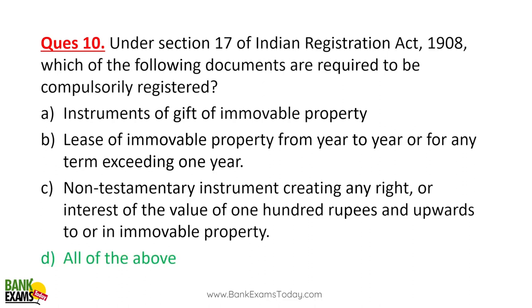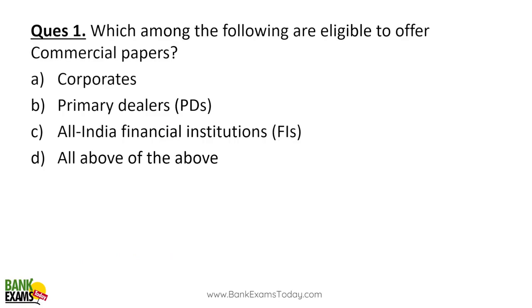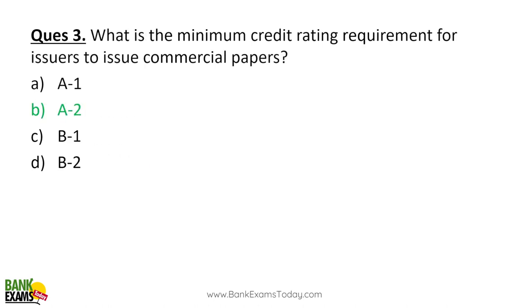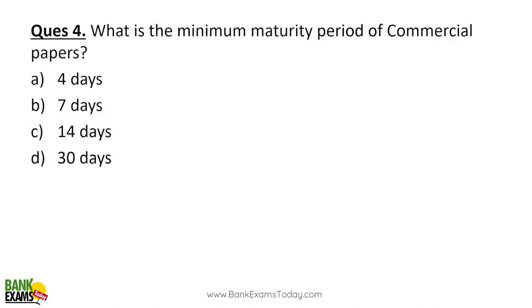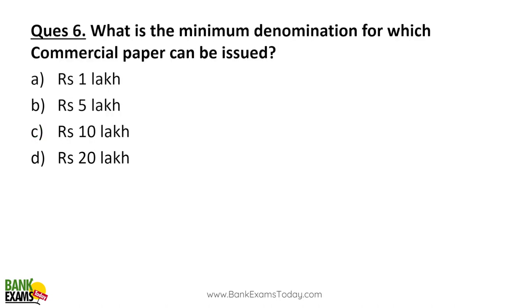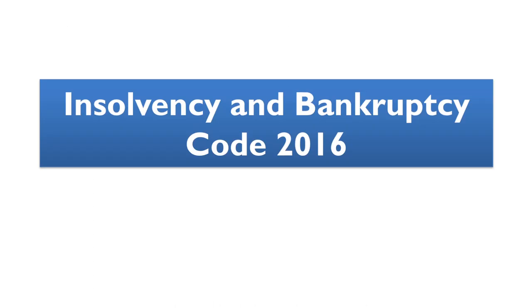The legal heirs of a deceased borrower are liable up to the value of assets inherited. Under Section 17 of the Indian Registration Act 1908, documents required to be compulsorily registered include: the will, non-testamentary instruments, lease of immovable property, and instruments of gift of immovable property. For commercial papers: eligible issuers are corporates, primary dealers, and all-India financial institutions. Minimum tangible net worth: 4 crores. Minimum credit rating: A2. Minimum maturity: 7 days. Maximum maturity: 1 year. Minimum denomination: 5 lakhs.